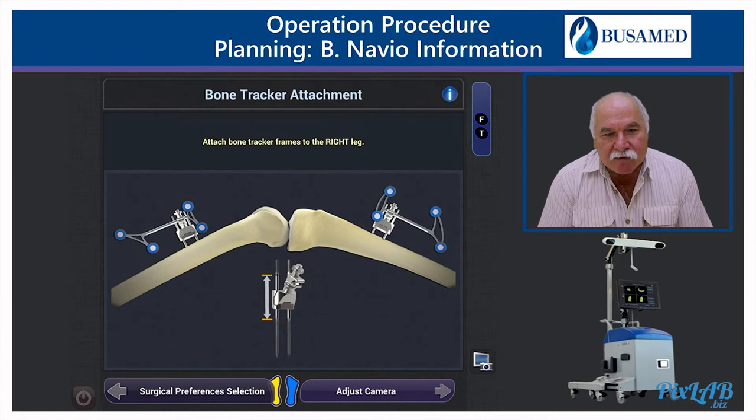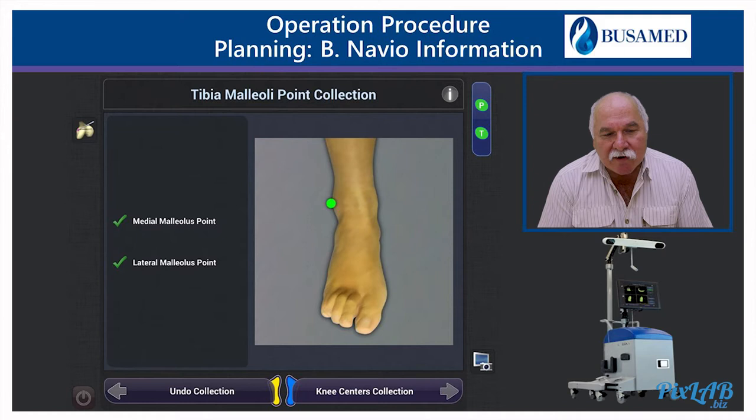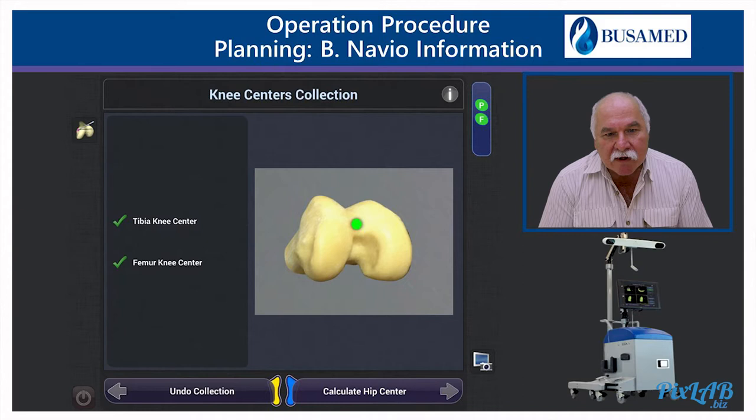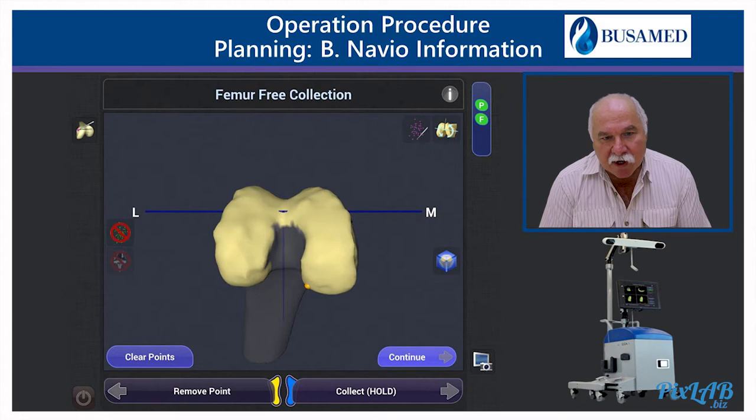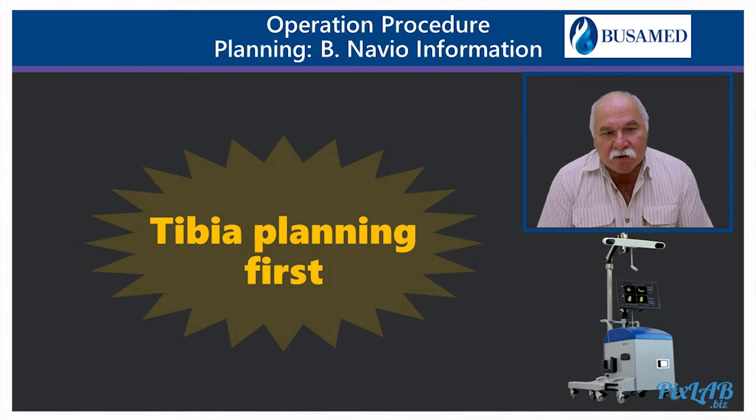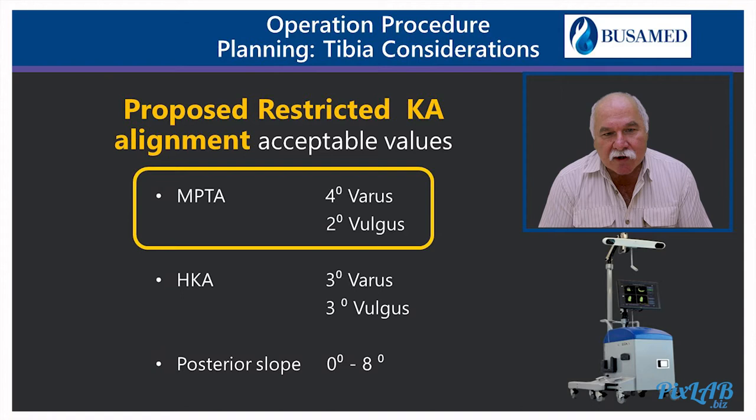Now we collect the Navio information. We have our trackers in position. We have our distal ankle, medial and lateral malleolus points, and the center of the femur. We have our hip center which we collected, and then we morphed or painted the femur as well as the tibia to get our 3D image.